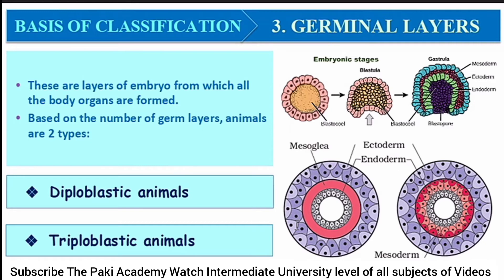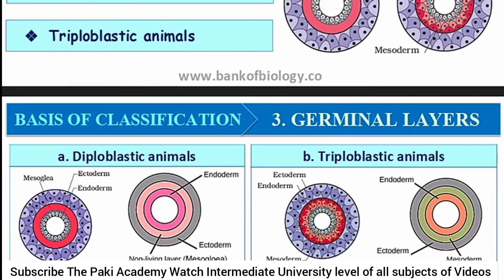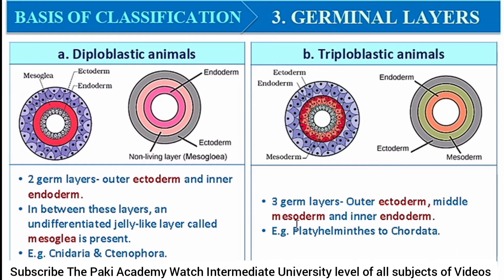Animals also contain germinal layers — these are the layers of the embryo from which all body organs are formed. There are three types: ectoderm, endoderm, and mesoderm. Diploblastic animals have two germinal layers — ectoderm and endoderm — with an undifferentiated jelly-like layer called mesoglea in between. Cnidaria and Ctenophora are examples. Triploblastic animals contain all three layers: ectoderm, mesoderm, and endoderm — Platyhelminthes and Chordates are examples.